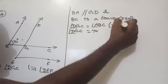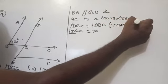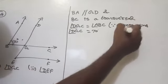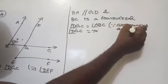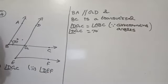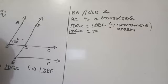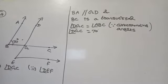Since corresponding angles are equal — if two parallel lines are intersected by a transversal, then the corresponding angles are equal, alternate interior angles are equal, alternate exterior angles are equal, and co-interior angles on the same side of the transversal are supplementary. We have completed the questions. In the next video, we will solve question number 7. Thank you, everybody.